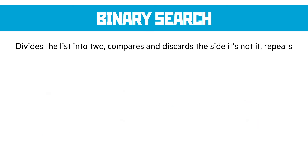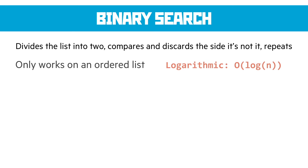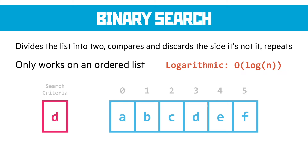A binary search is much better. It divides the list into two, compares and discards the side the item isn't in, and repeats. It only works on an ordered list — the previous approach works on an unordered list, but binary search requires a sorted one. Because of that, it's logarithmic: the increase in time and space complexity as n grows doesn't increase by much.